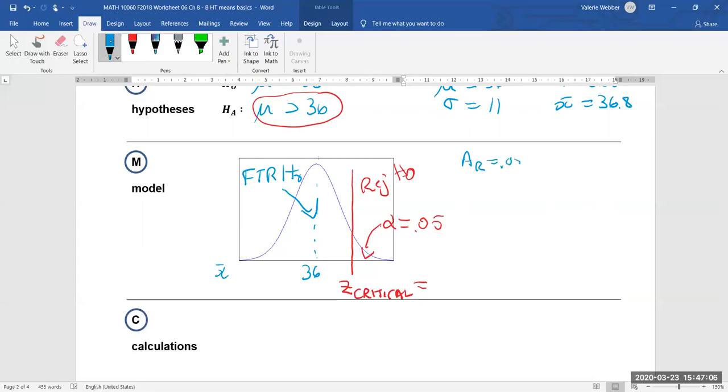And that implies area to the left is equal to 0.95 and if we look up the zed tables it implies zed is equal to, we look that up and we can see 1.645. So now we have our zed critical.